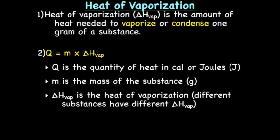Next up, heat of vaporization. Heat of vaporization, or ΔH_vap, is the amount of heat needed to either vaporize or condense one gram of a substance. So if we're vaporizing or condensing, we're talking about the liquid and gas phases. So if we're vaporizing, we're going from liquid to gas. And if we're condensing, we're going from gas to a liquid.